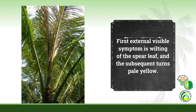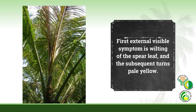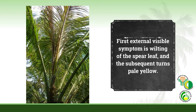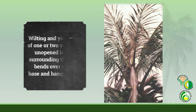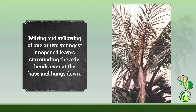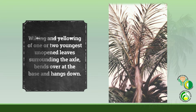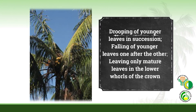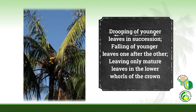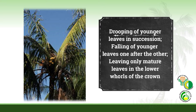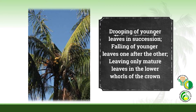The first external visible symptom is wilting of the spear leaf, which subsequently turns pale yellow. Wilting and yellowing of one or two of the youngest open leaves surrounding the axle follows. Leaves bend over at the base and hang down, with drooping and falling of younger leaves in succession.